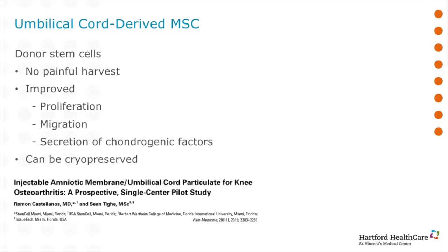An alternative to bone marrow aspirate concentrate is donor stem cells taken from amniotic membranes or umbilical cords. These cells come from younger patients and demonstrate improved proliferation, migration, and secretion of growth factors that promote cartilage repair. These cells can be freeze-dried and reconstituted, minimizing the risk of reaction to donor tissue. In a recent study looking at commercially available mesenchymal stem cells, patients with diffuse knee osteoarthritis had significantly improved pain and function compared to the use of viscosupplementation.